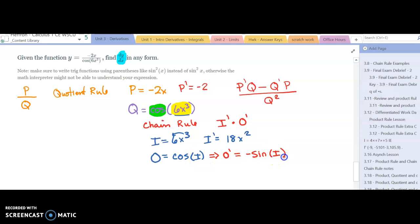So we will multiply these two primes, these two derivatives. Q prime will be our I prime times our O prime, or our 18x squared times—I'm going to use parentheses because of this negative sign in here.